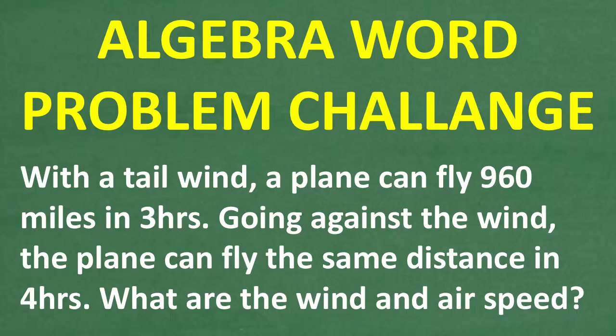With a tailwind, a plane can fly 960 miles in three hours. Now, going against the wind, the plane can fly the same distance in four hours. So what are the wind speed and the air speed of the plane?